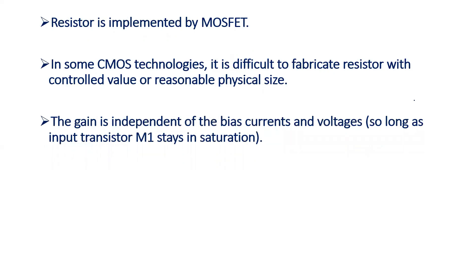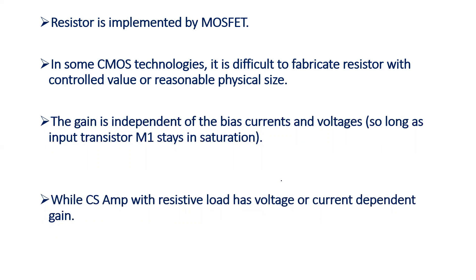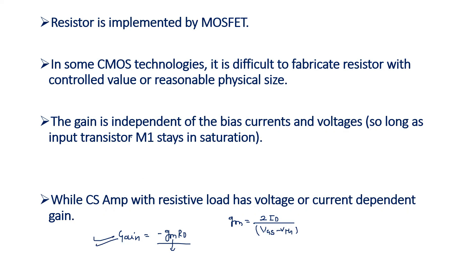Third point: the gain is independent of bias current and voltage. In the common source amplifier, the gain in general is minus Gm·Rd. This Gm is nothing but 2·Id divided by (Vgs - Vth), so Gm is a function of voltage or current. That is why Gm is variable with overdrive voltage or current, and your gain is also variable. So if we want to make this gain independent of bias voltages and currents, we can simply apply a diode connected device.